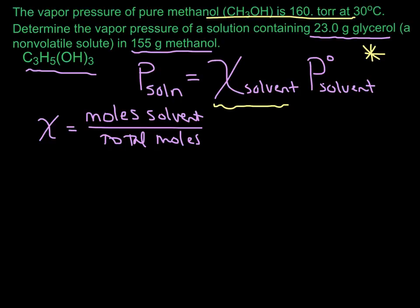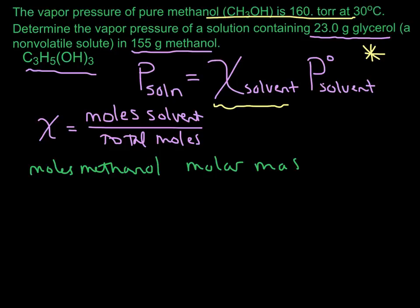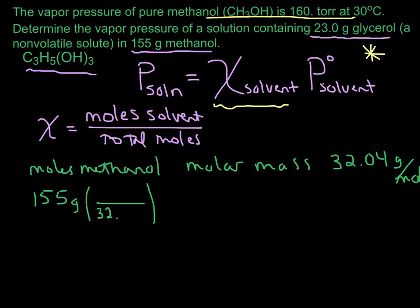Let's calculate the moles of methanol. The molar mass for methanol is 32.04 grams per mole. So we take 155 grams of methanol divided by 32.04 grams per mole, and we get 4.838 moles of methanol.